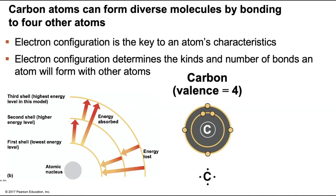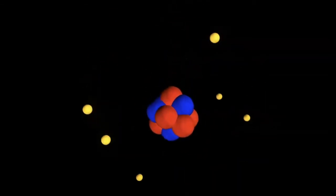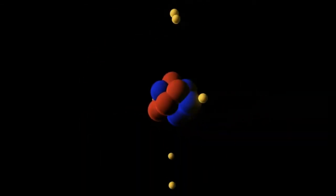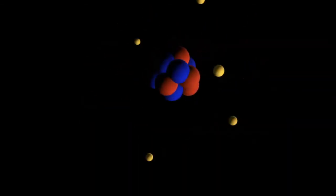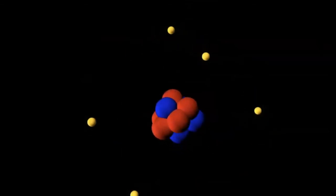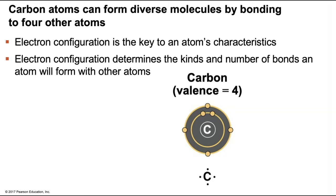Keep in mind that the electrons do not orbit the nucleus in a fixed circle like this. This is a Bohr model of carbon, named after the Danish scientist Niels Bohr. Notice how the electrons move around the nucleus without a particular pattern in what we refer to as an electron cloud. The most important electrons of an atom are the ones in the outermost shell, which we call the valence shell. The electrons are called valence electrons — these are the reactive parts of the atom.